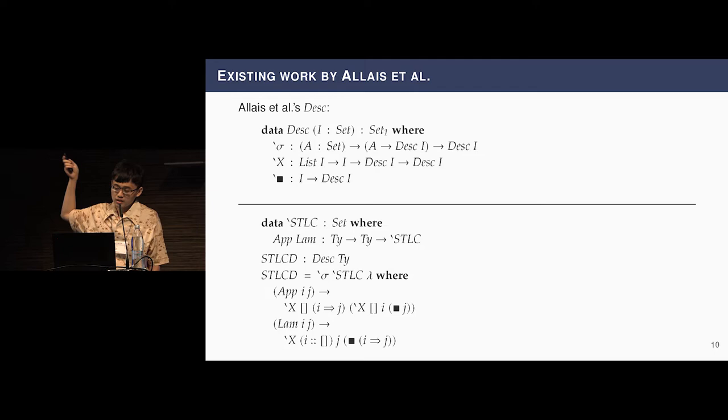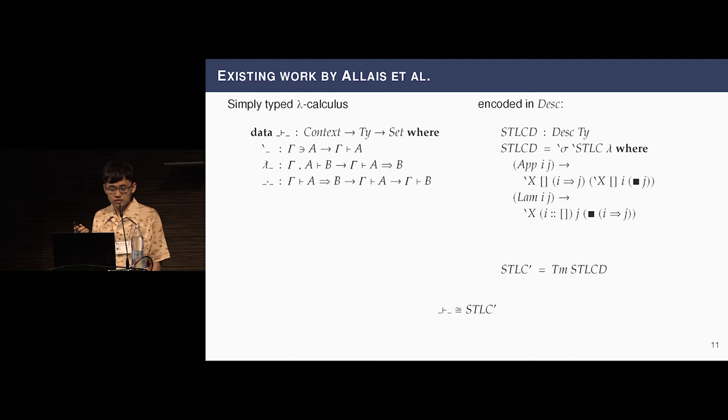And you can see it's parameterized by types i, which is the type of the object language you are defining. So, when I use the universe desk i, or in this case, desk ty, it basically says every inhabitant in this universe is a syntax that every term has a type ty, and also, it has a context that's list of ty.